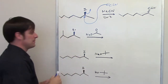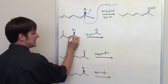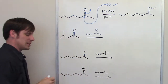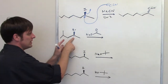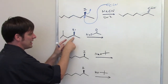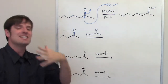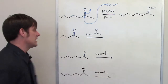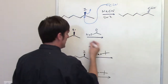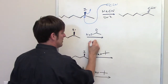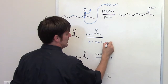Now let's look at this next one. The carbon bound to my leaving group — is it primary, secondary, or tertiary? It's got a carbon to the right and a carbon to the left. That's two carbons — it's secondary. So that means it could be any of the above, and I'll write them all down: SN1, E1, SN2, and E2.